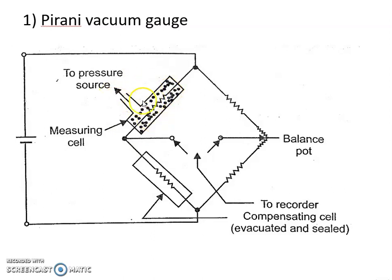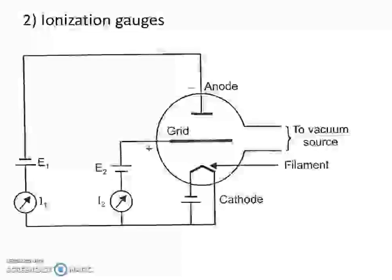They have certain disadvantages like poor transient response and operation requires electrical power. This is about Pirani vacuum gauge.